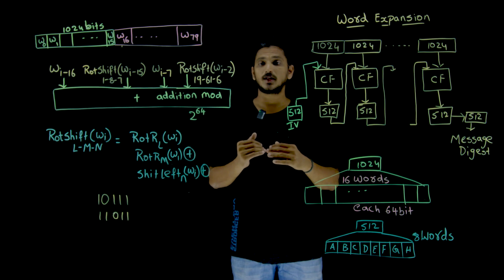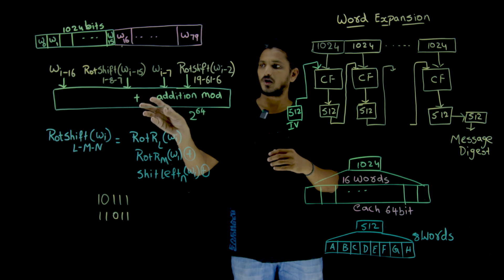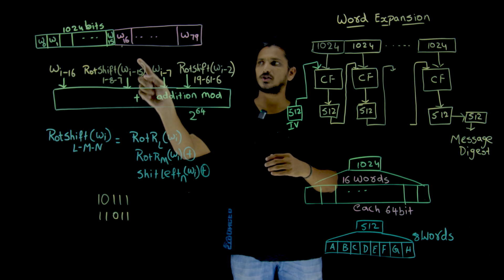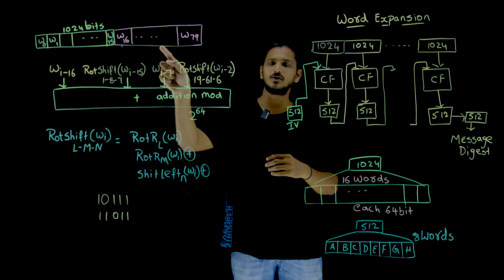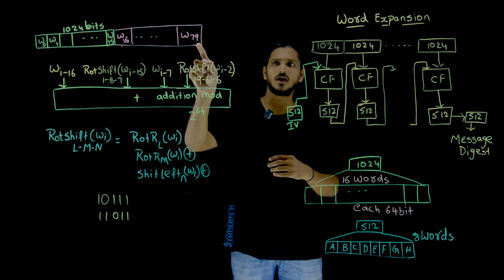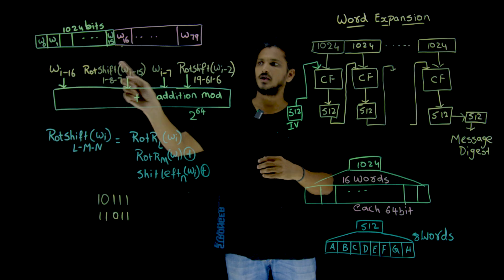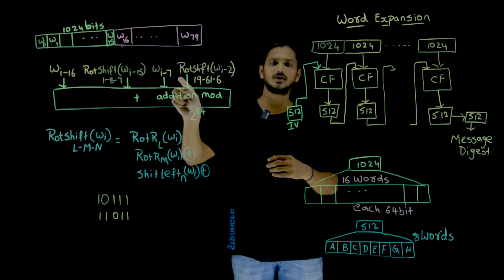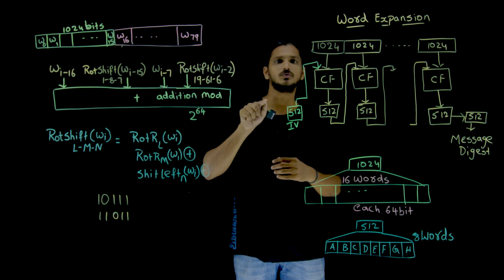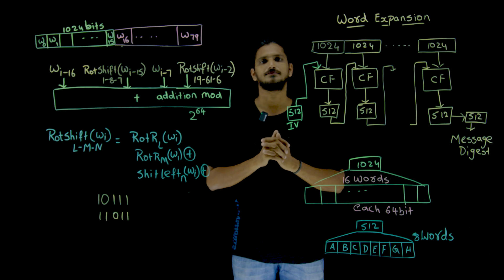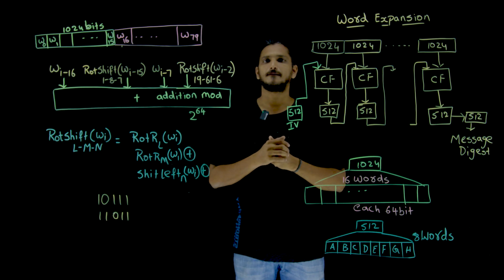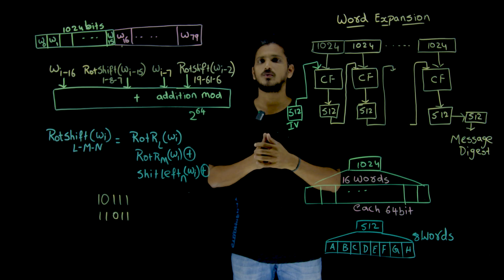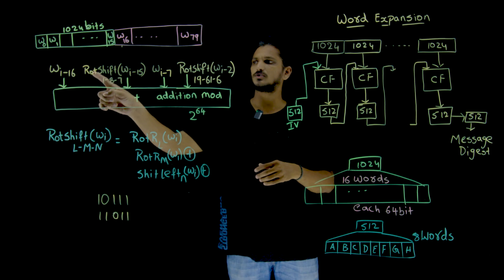The output we get is w16. Similarly, w17, w18, and so on are generated up to w79. For w79, we use w63, w64, w72, and w77 (i.e., 79-16, 79-15, 79-7, 79-2) — the previous words. That is how the generation proceeds.